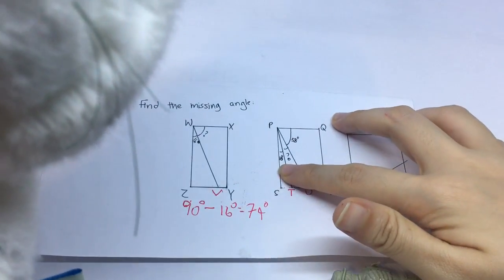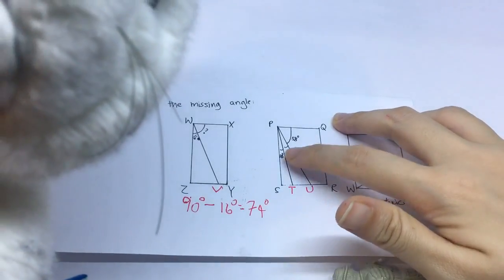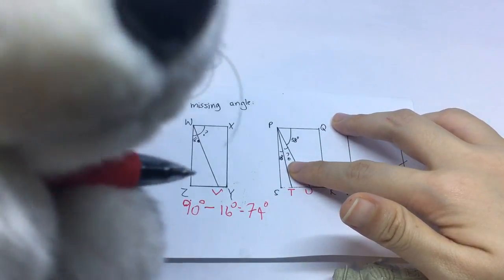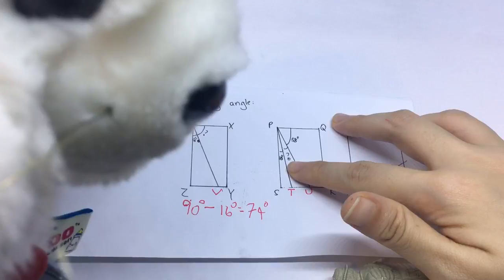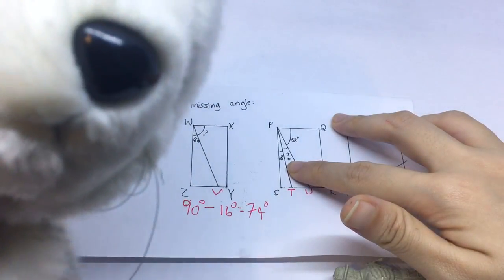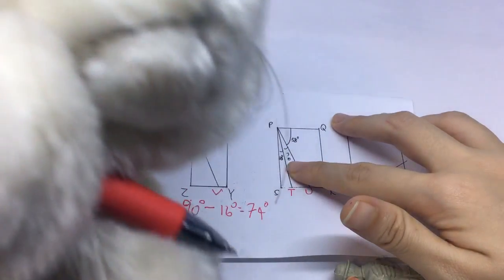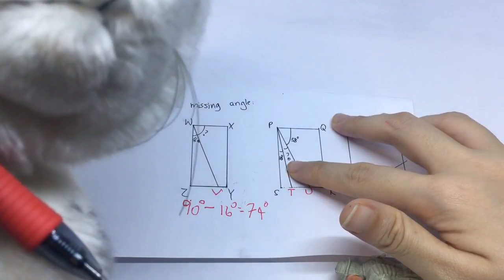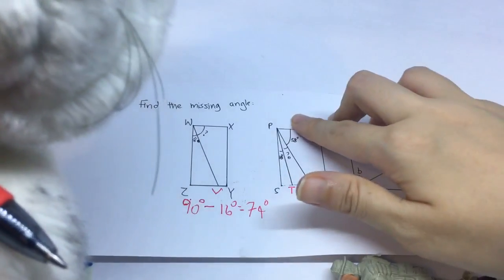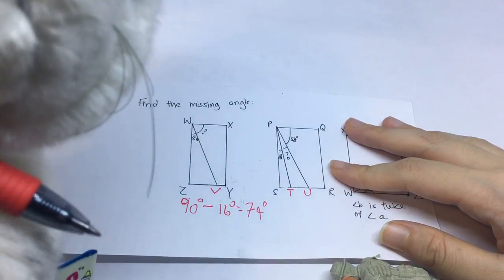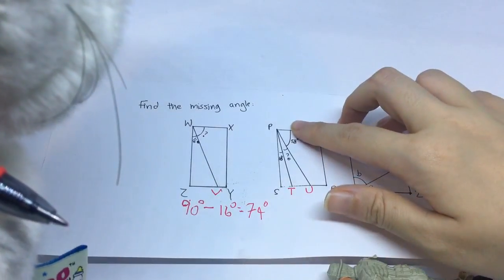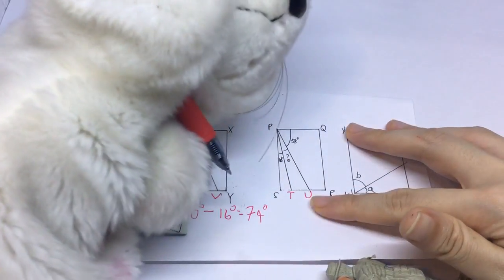So you see, this is ten degrees, and this is fifty-eight degrees. How many degrees is this? This is ninety minus ten, eighty degrees. But what happened to this fifty-eight? Remember, the whole thing makes up ninety degrees. So, what does the whole thing make up? Ninety degrees.